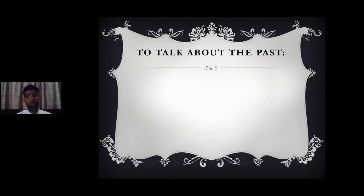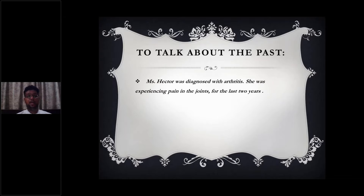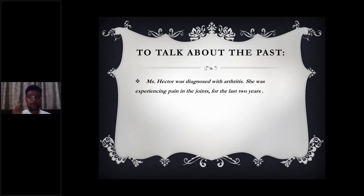Now let us see the uses of the past tense. To talk about the past: 'Miss Hector was diagnosed with arthritis. She was experiencing pain in the joints for the last two years.' This is an amalgamation of two sentences. The first sentence — 'Miss Hector was diagnosed with arthritis' — is simple past. The second — 'She was experiencing pain in the joints' — is past continuous. So we have two varieties of tenses within one paragraph.